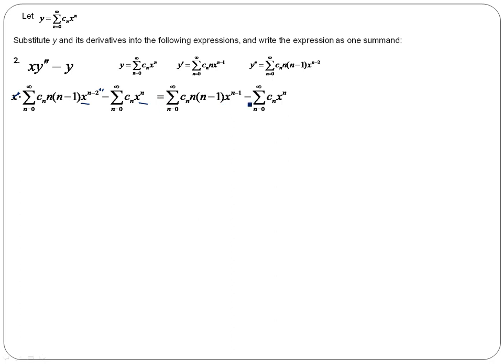Now that our terms are brought inside, now we can make that change of variable. We want k in each case to equal the exponent on the x. And so in this first summation, I want k to be equal to n minus one. And in this second summation, I want k to be equal to n. And again, if k is n minus one, then n is k plus one.